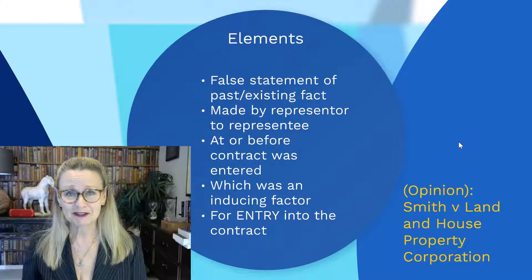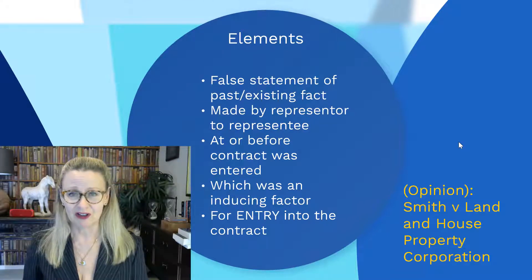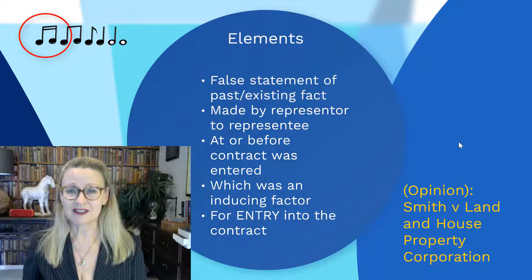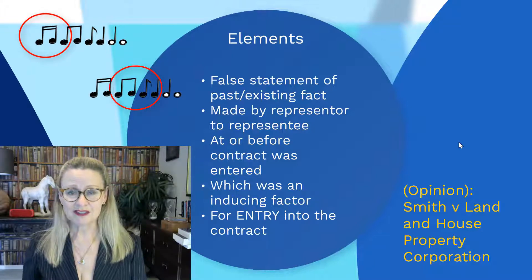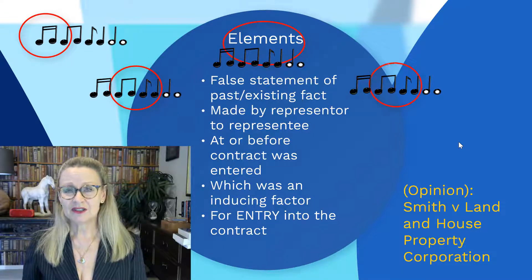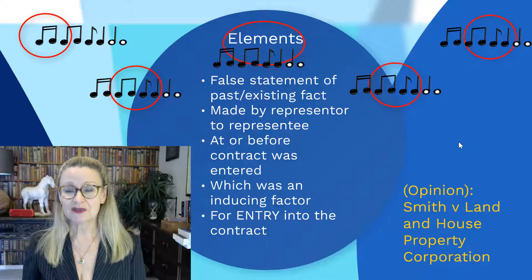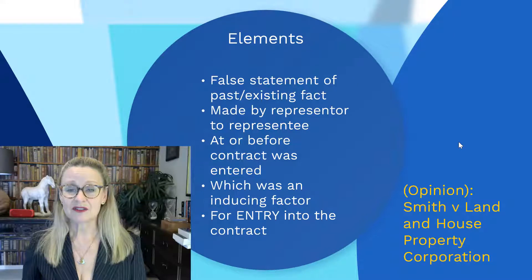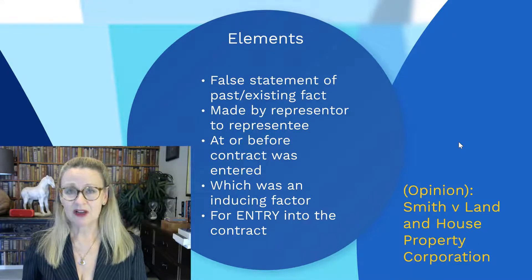There needs to be a false statement of past or existing fact made by the representor to the representee at or before the time the contract was entered, which was an inducing factor — not the sole inducing factor, but an inducing factor — inducing entry into the contract. Entry into the contract is your conduct that shows the representee has relied on the misrepresentation, which links up the misrepresentation to the loss that was suffered.